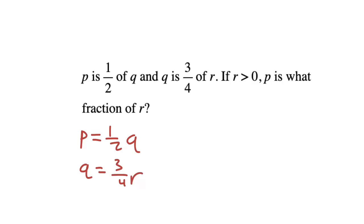P is what fraction of R? We can see we have a system of equations — two equations — and we want to find the relationship between P and R. Right now they're in separate equations, but what connects them is the variable Q. We know Q equals three fourths of R, and we have Q in our P equation. Therefore, we can just substitute that in to find the relationship between P and R.